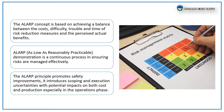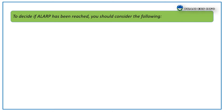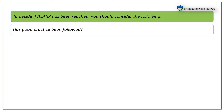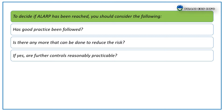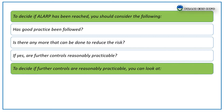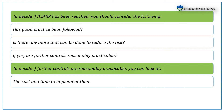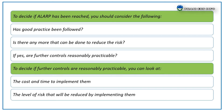To decide if ALARP has been reached, you should consider the following: Has good practice been followed? Is there anything more that can be done to reduce the risk? If yes, are further controls reasonably practicable? To decide if further controls are reasonably practicable, you can look at the cost and time to implement them, and the level of risk that will be reduced by implementing them.